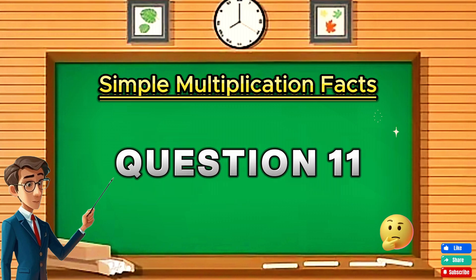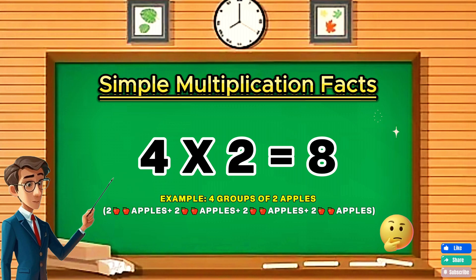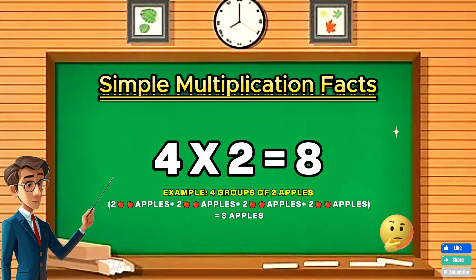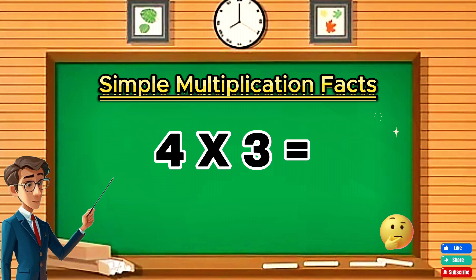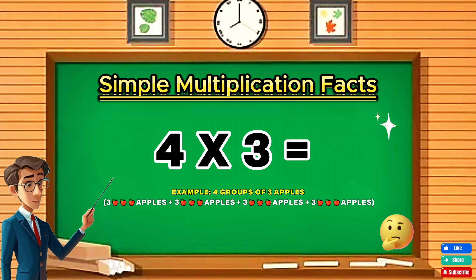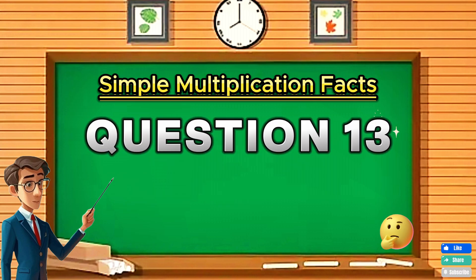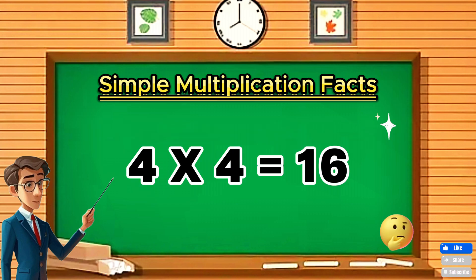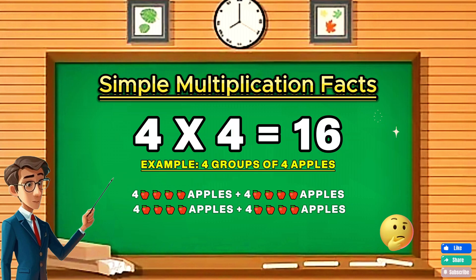Question eleven: Four times two equals eight. Question twelve: Four times three equals twelve. Question thirteen: Four times four equals sixteen.